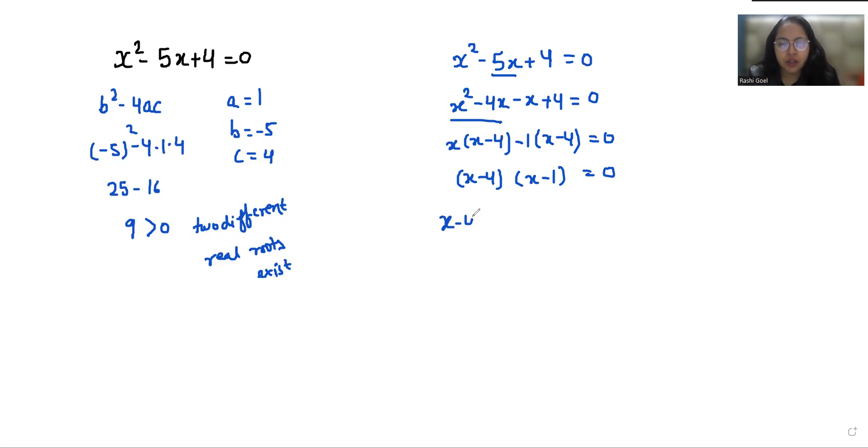So x minus 4 equals 0, from here x equals 4, and x minus 1 equals 0, from here x equals 1.